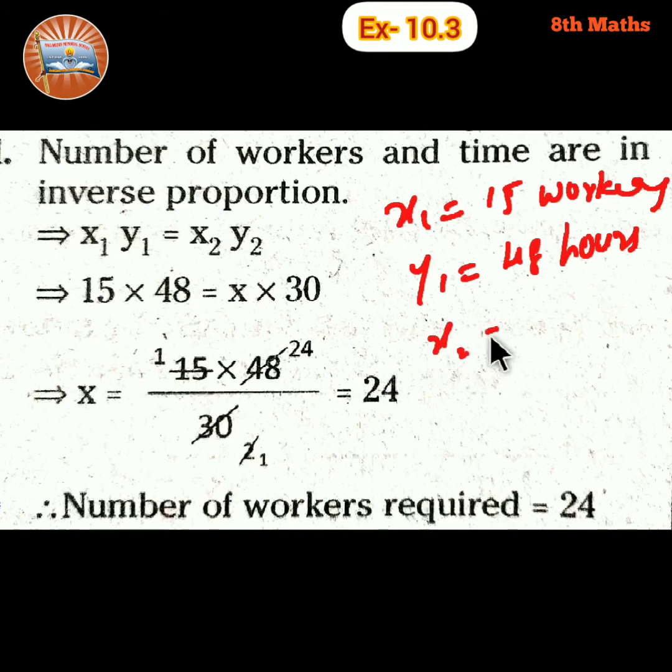x2 is considering here x. So if you want to take it as x2 also, no problem. So y2 is 30 hours. So both are inverse proportion. So let's replace the values.